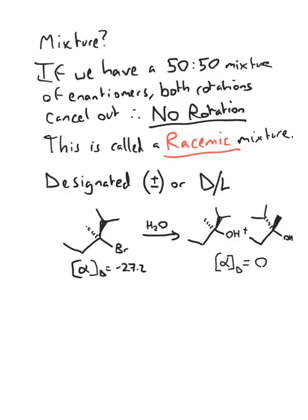However, if you have a random variation of other concentrations, so like a 70-30 or a 20-80, you will get rotation in the direction of the majority amount, but it won't be as much as the pure enantiomer.